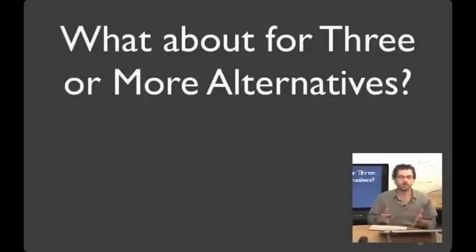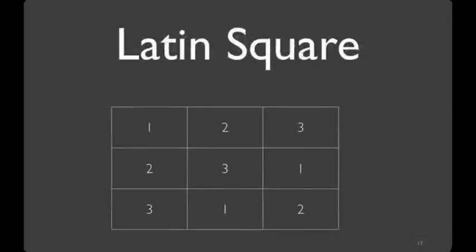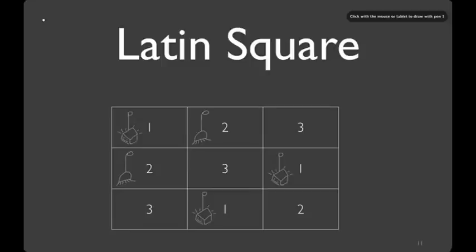Okay, so now we know a couple of ways of dealing with two different alternatives. But what if we have three? With three alternatives, you can use something called a Latin square. I'll explain how this works with three conditions. It generalizes to more. In a classic Latin square design, each person is going to use all three conditions. You'll randomly divide your participants up into three different groups. The first group is going to get the first one first, the second one second, and the third one third.